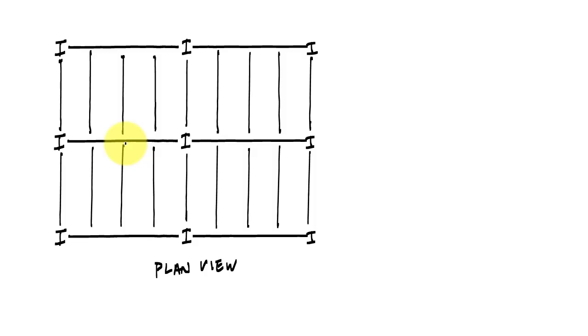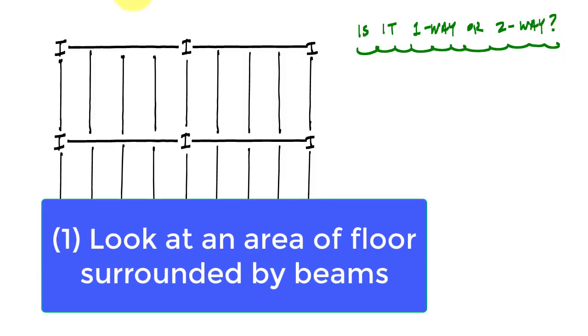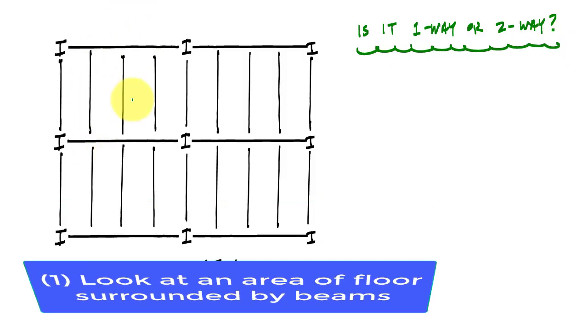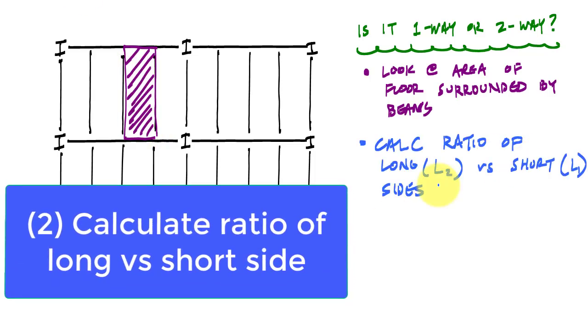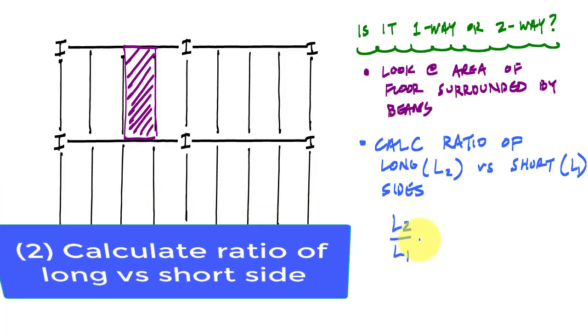In order for us to do that, we want to know if it's a one-way or two-way system. To determine if it's a one-way or two-way system, we look at an area of the floor that's surrounded by beams. This shaded in purple is a typical area surrounded by beams, and I want to calculate the ratio, so I'm going to calculate L2 over L1, where L2 is always the long side and L1 is the short side.